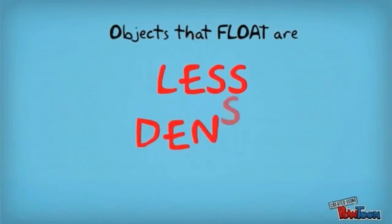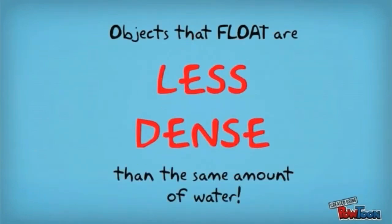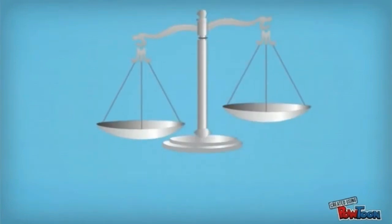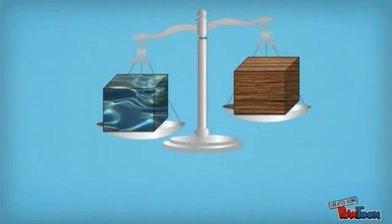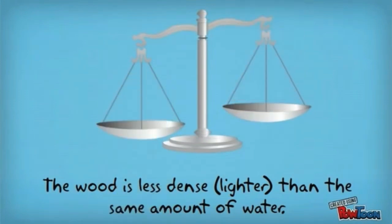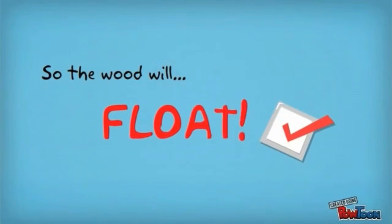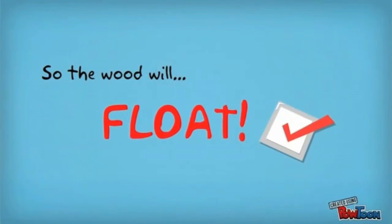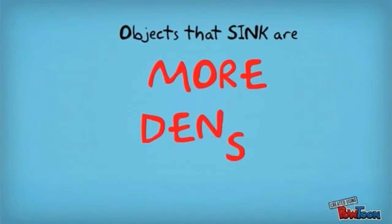Objects that float are less dense than the same amount of water. Objects that sink are more dense than the same amount of water.